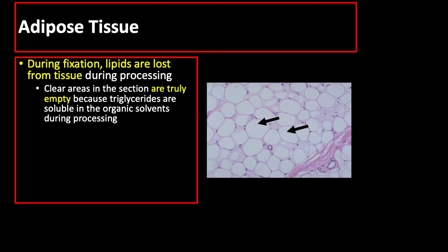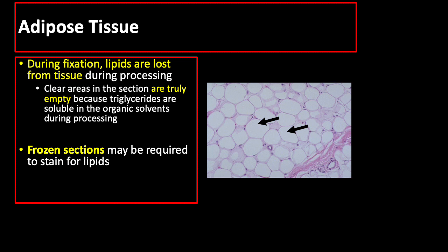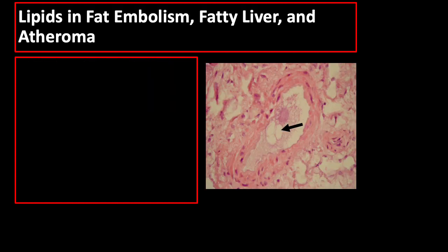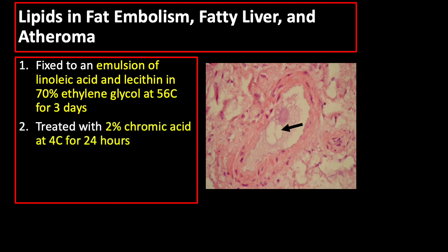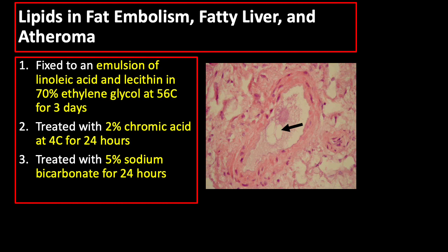With standard methods of fixation, lipids are largely lost from tissues during processing. The clear areas in sections indicated by black arrows are truly empty because triglycerides in fat droplets are soluble in the organic solvents used during processing and are removed. Therefore, frozen sections may be required to stain for lipids, best demonstrated by cryostat sections. Lipids present in fat embolism, fatty liver, and atheroma may be fixed for paraffin sections by exposing sections to an emulsion of linoleic acid in lecithin and 70% ethylene glycol at 56°C for 3 days, then treated with 2% chromic acid at 4°C for 24 hours followed by 24 hours in 5% sodium bicarbonate.